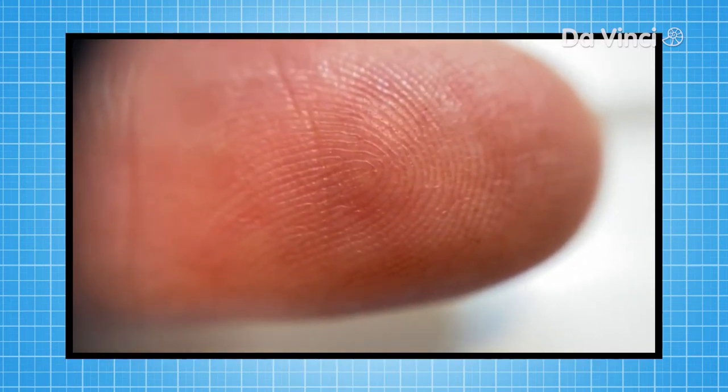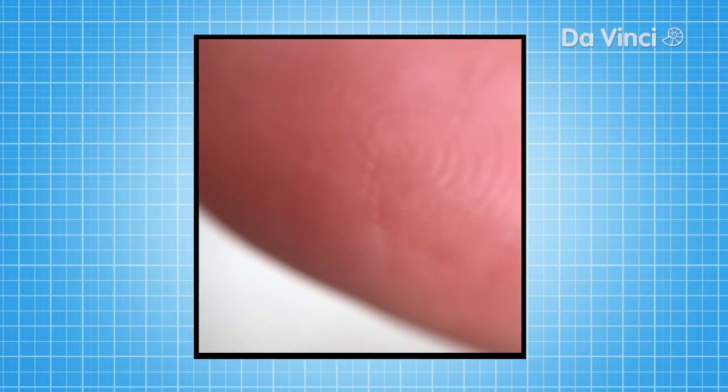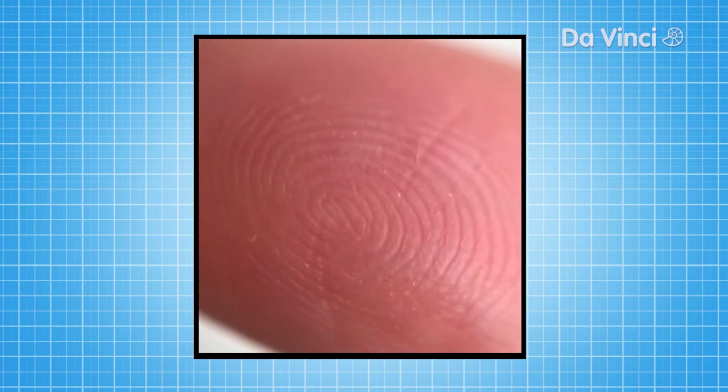Look at this fingerprint. Can you see the loop? And what about the whorl in this one? Take a close look at your own fingerprints and see what type you have.